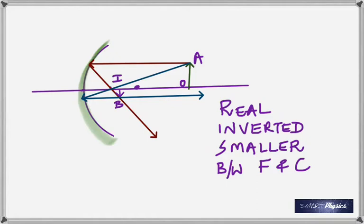DO is object distance, DI is image distance, and F is the focal length. Will you take F as positive or negative for a concave mirror? A concave mirror has a real focus, so F is positive. All real distances are positive. For a concave mirror the focal length is positive; for a convex mirror, the focal length is negative.